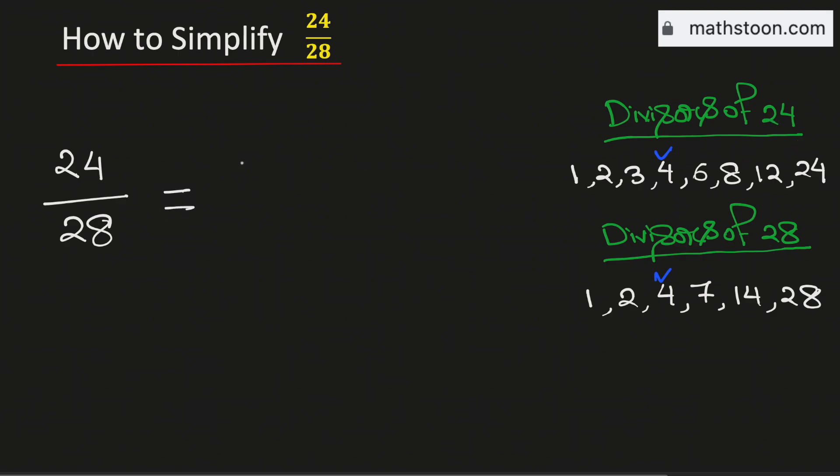Now, to simplify this fraction, we will divide both the numerator and the denominator by 4. And if we do it, we will get 6 over 7.